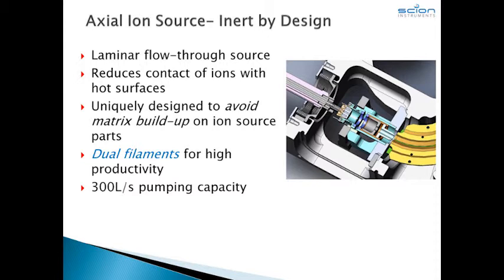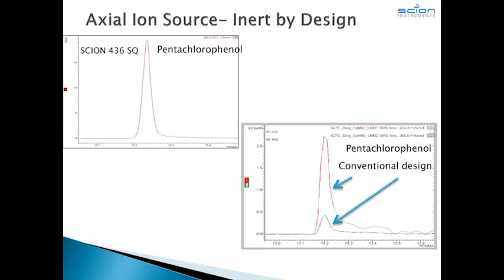Add dual filaments and a 300-liter-per-second turbomolecular pump, and you have a system designed for near-continuous performance. Here we see two traces. The upper left shows the extracted ion for pentachlorophenol — no tailing and a strong signal. The lower trace is also for pentachlorophenol on a GC-MS that uses a conventional source design, where you can see the tailing and eventual loss of signal due to the analyte coming into contact with the hot surfaces.